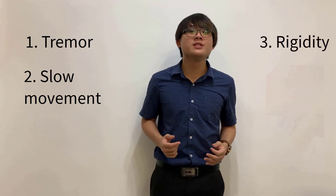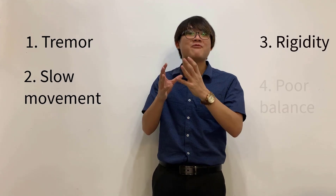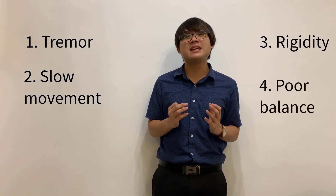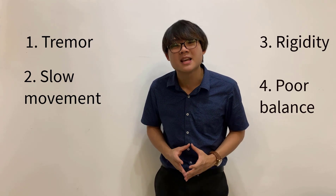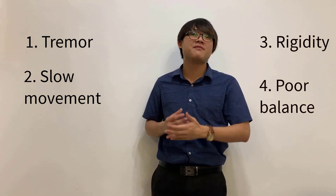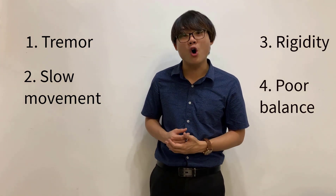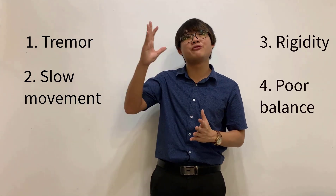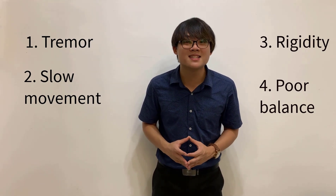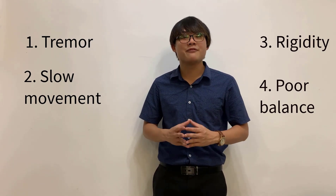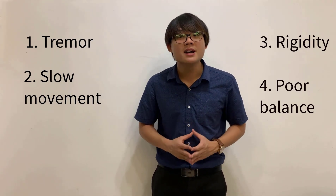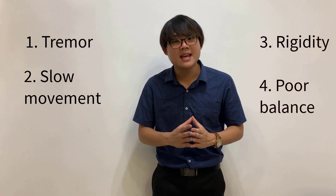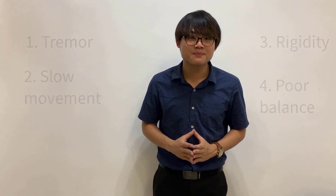Last but not least, Parkinson's patients do have poor balance, and this gives a very hazardous consequence because they can suffer from falls. So please remember these four important clinical features of Parkinson's disease: tremor, slow movement, rigidity, and poor balance.